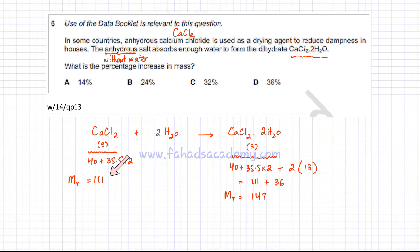So initially, the mass was 111, now it's 147. So what is the increase in mass? The increase in mass, you subtract the two, so the increase in mass is going to be 36. That's the increase in mass, or we can say increase in MR. So it's 36.